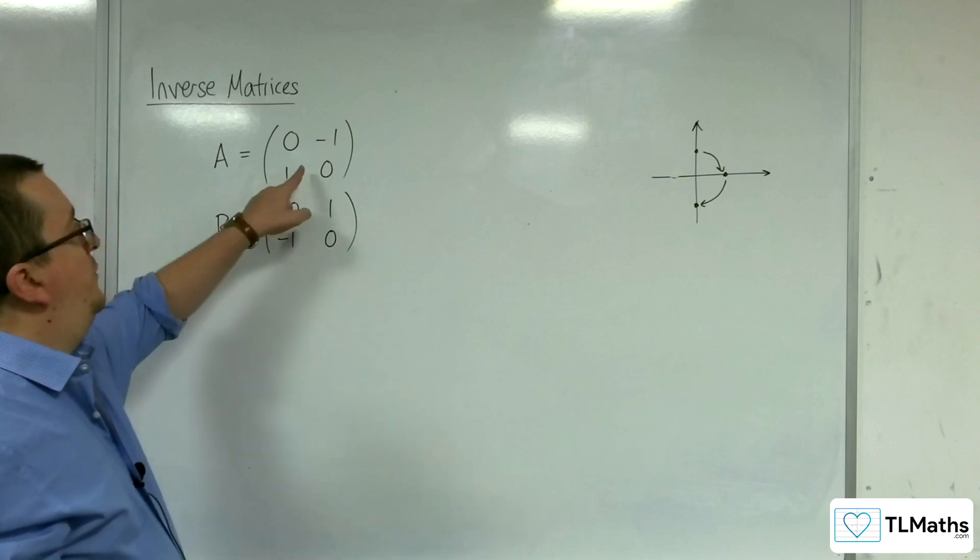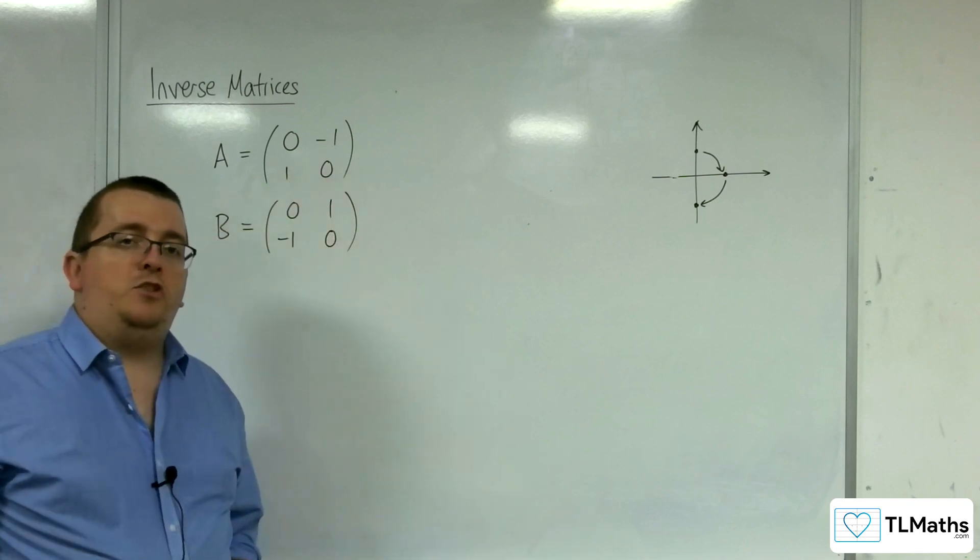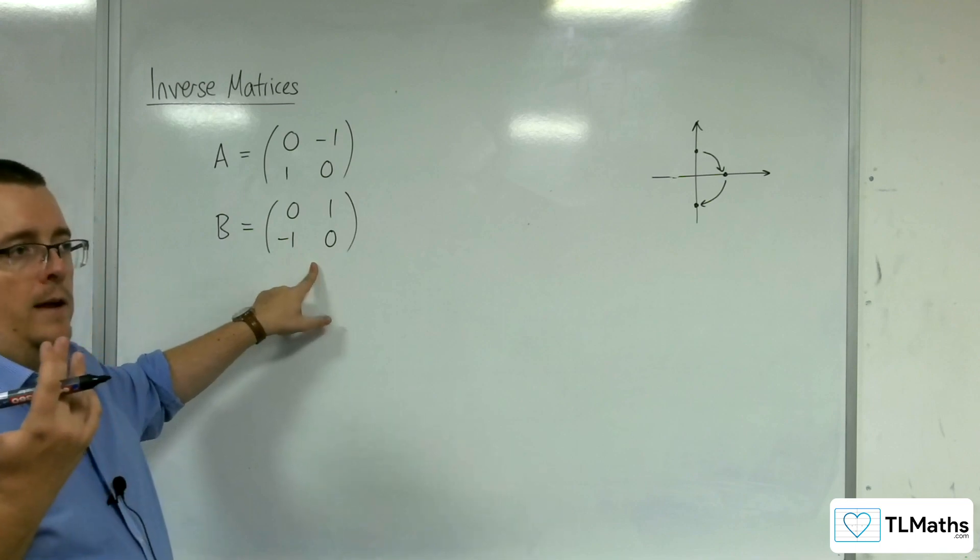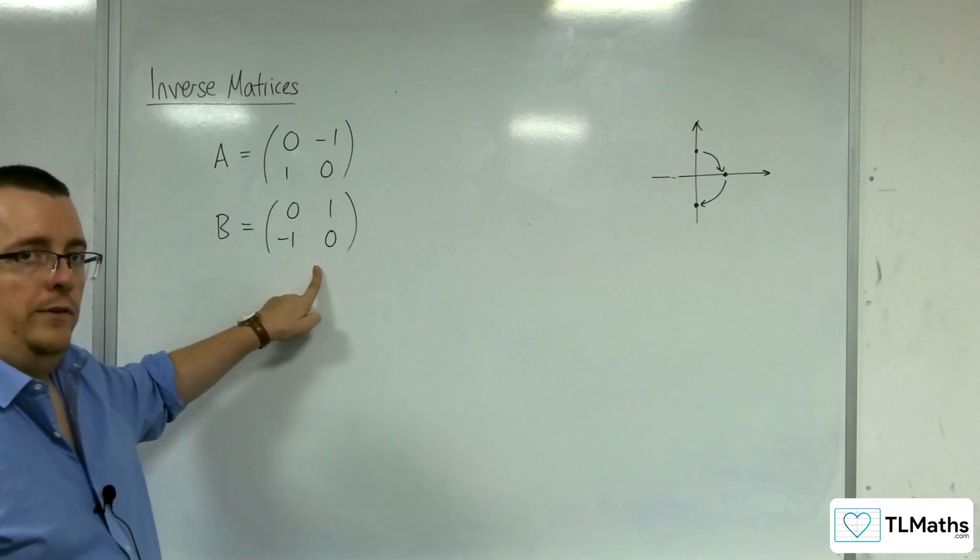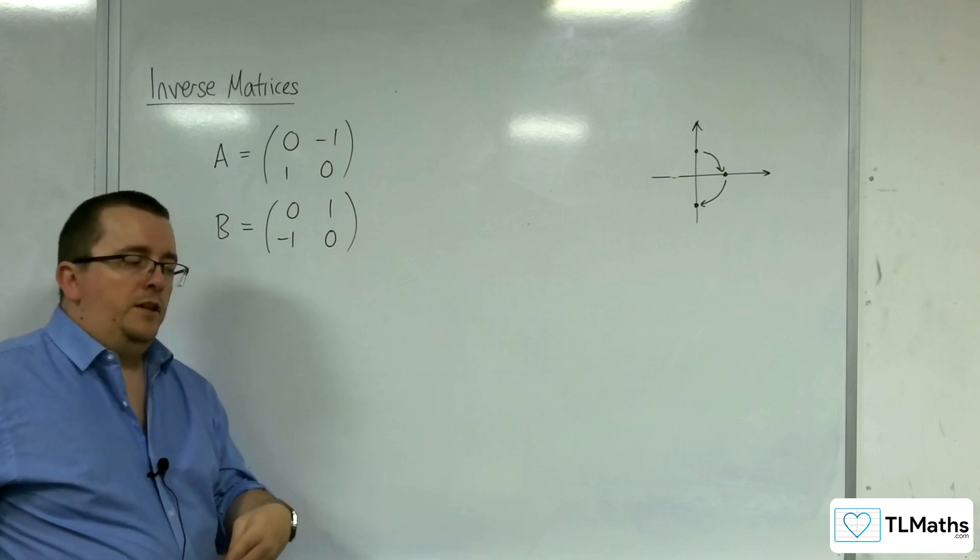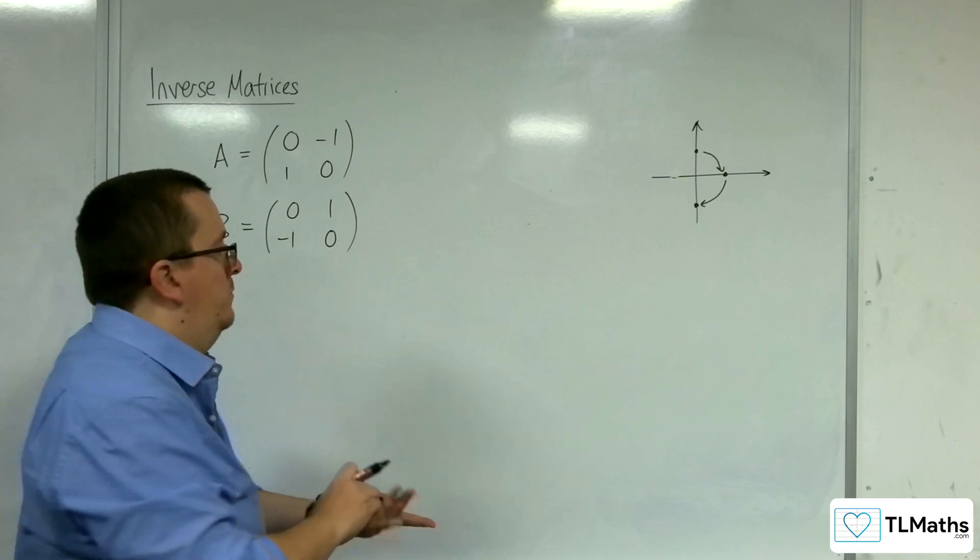So if this represents a rotation 90 degrees anticlockwise, and this represents a rotation 90 degrees clockwise, if you do one and then the other, you should get back to where you started, right?